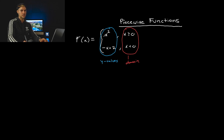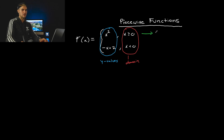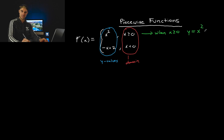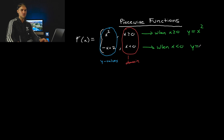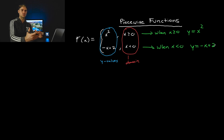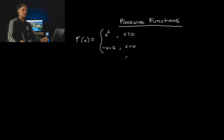You read them in rows. So like this row here — another way to think about it — basically what it's saying is: when the x-values are greater than or equal to zero, the y-values are defined by the function x squared. And this row here: when the x-values are less than zero, the y-values are defined by negative x plus two. That's basically how you read these functions. This part is what the y-values are defined by, and this part is the domain for those specific functions.